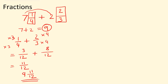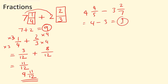Let's do a subtraction: four and four fifths take away three and two sevenths. What we can do is take the whole numbers: four take away three gives us one. We'll use this one later. Now let's do the fractions: four fifths take away two sevenths. Find the common denominator.